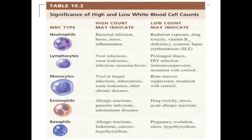Table 19.2 on page 709 goes through the different types of white blood cells and what a high count or low count may indicate. Study this table on your own time — quiz and exam questions are often pulled from tables and figures.